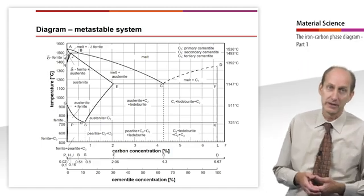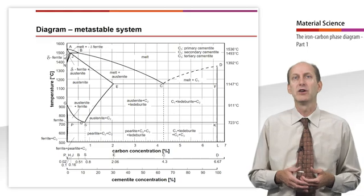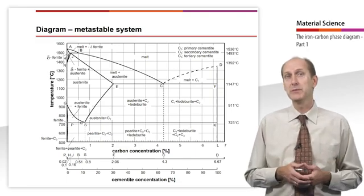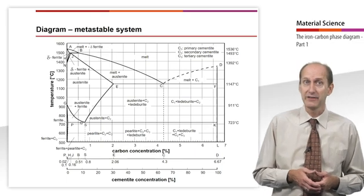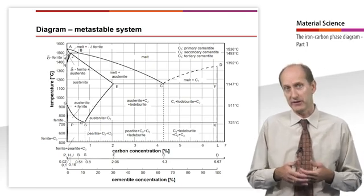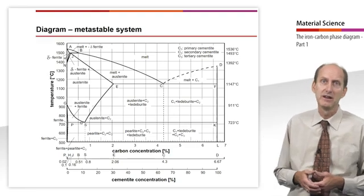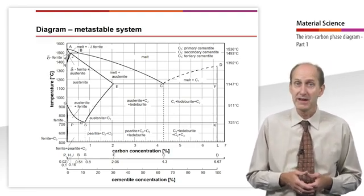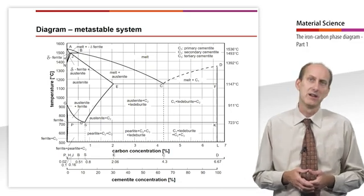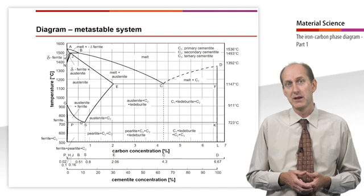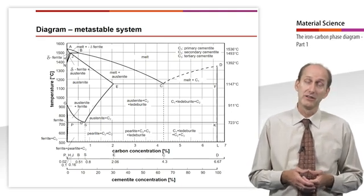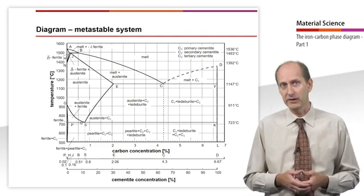When dealing with cast iron and gray cast iron in particular, we concentrate on the stable iron-carbon phase diagram. When dealing with steel, however, we are only interested in the metastable system of iron and iron carbide. The phase diagram also indicates the proportion of cementite below the carbon scale. Cementite is an intermetallic compound of iron and carbon with the formula Fe3C, characterized by high strength and hardness but also by a low degree of toughness. A carbon content of 6.67% corresponds to a cementite content of 100%, which is why the iron-iron carbide phase diagram ends here.